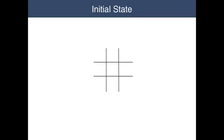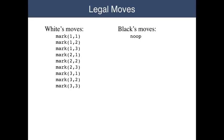To start with, a player can use the game description to determine the initial state. In the case of Tic-Tac-Toe, we have a board with nine empty cells. Given a state like the one we just saw, a player can use the game description to compute the legal moves for each of the players. In this case, the white player can mark any of the nine cells, and the black player must do nothing.